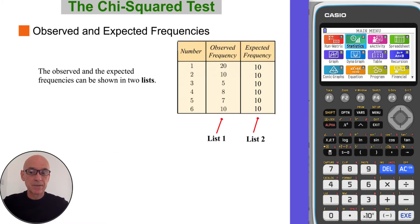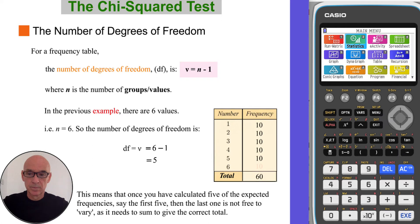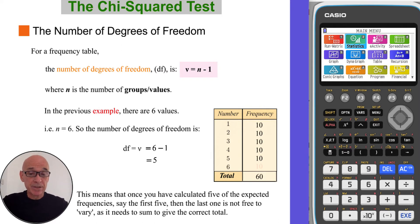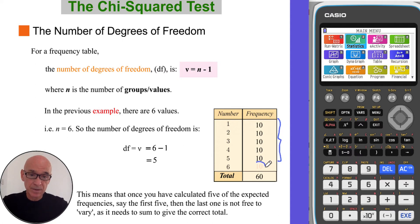The observed and expected frequencies can be shown in two lists. For a goodness of fit test, the number of degrees of freedom is found using the formula n minus 1, where n is the number of groups or values. In our example there are six values, so degrees of freedom equals 6 minus 1, which is 5. This means that once you've calculated 5 of your expected frequencies, the sixth doesn't need to be calculated — it's constrained to give a sum of 60.